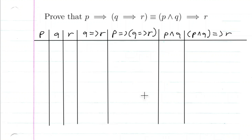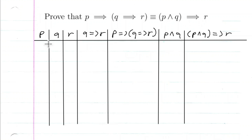Today we're going to prove that P implies Q implies R is logically equivalent to P and Q implies R. The whole point of doing this is, if you have a theorem in the form P implies Q implies R, it would be much easier to deal with that theorem if we put it into the form P and Q implies R. Just like all these logical equivalences, it's to make our lives easier when trying to prove theorems.